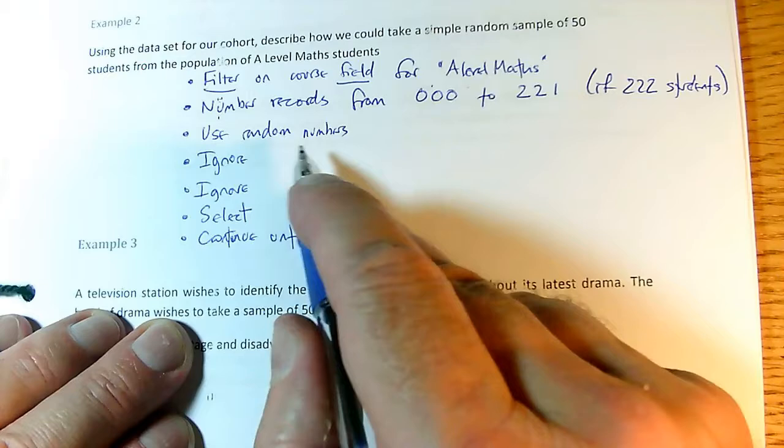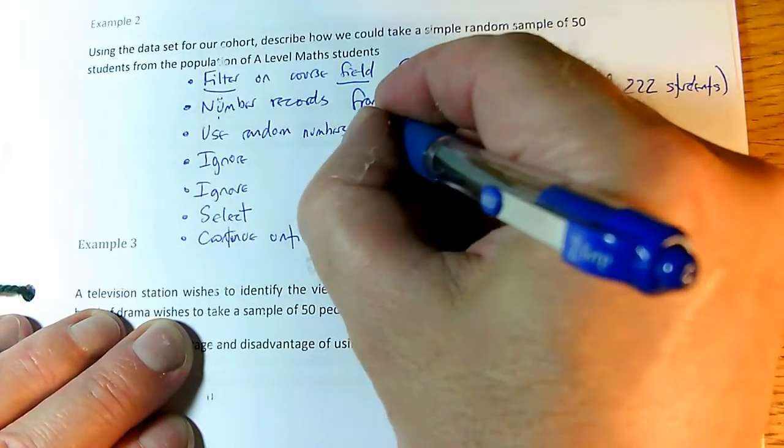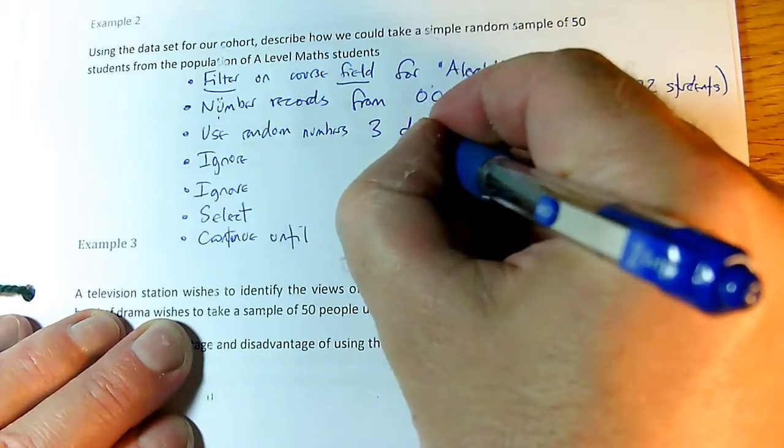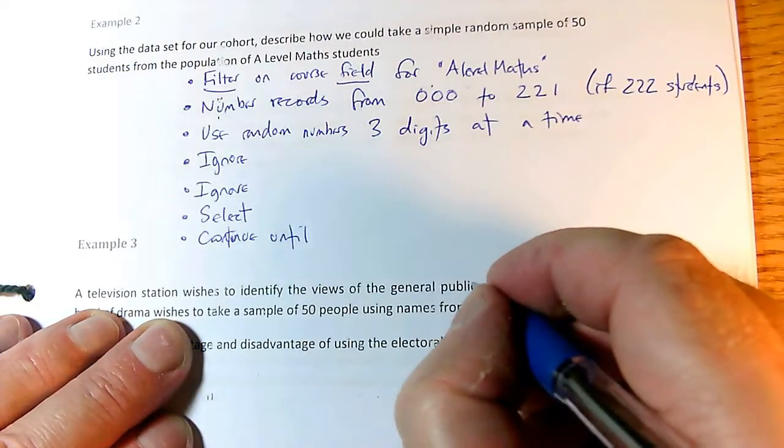So we need to use random numbers. If these are the patterns of our numbers of people, we need to use three digits at a time. And you need to specify the number of digits.